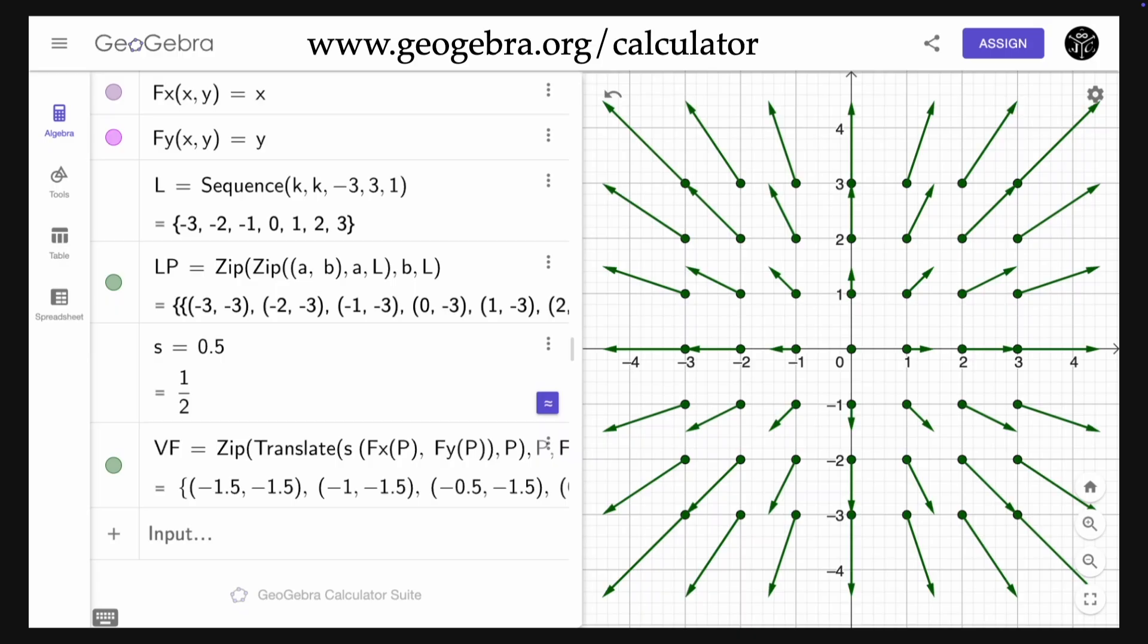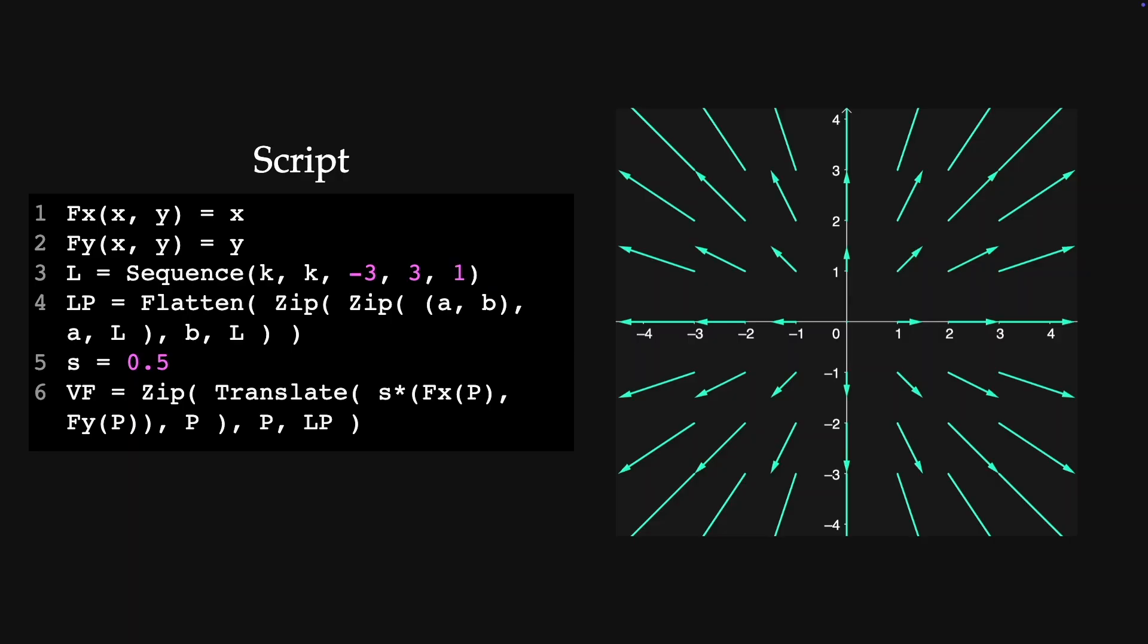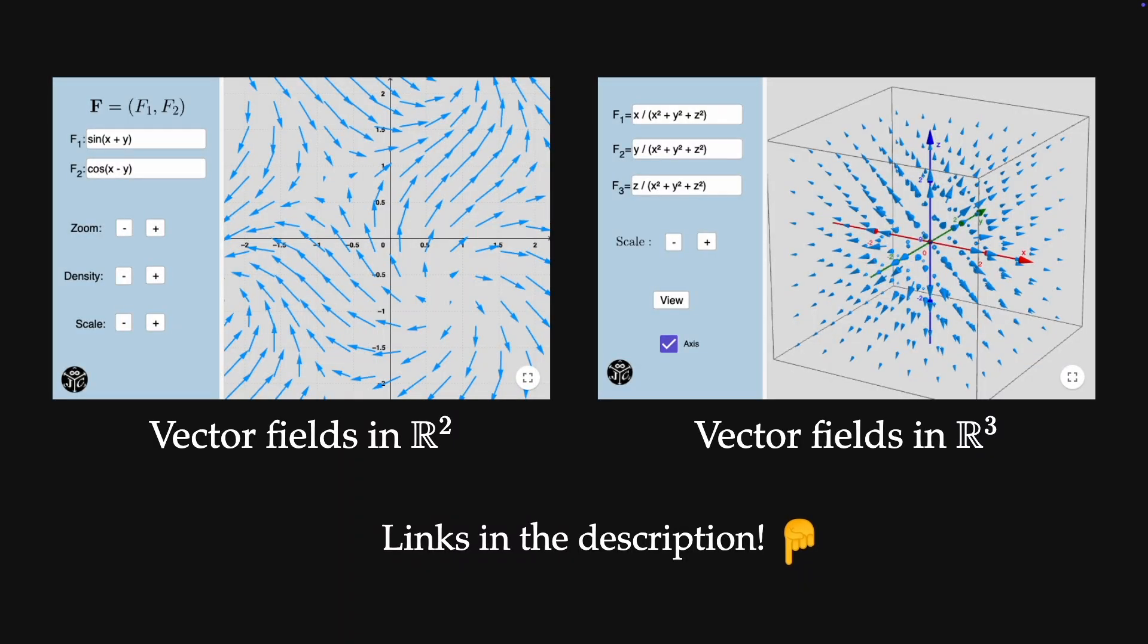You can also plot vector fields in 2D. You just need to go to geogebra.org/calculator to open the calculator suite. The script is even simpler. But if you prefer just to explore vector fields in 2D and 3D, then you can just use these applets that I made a while ago. You just need to change the components. The links are in the description.